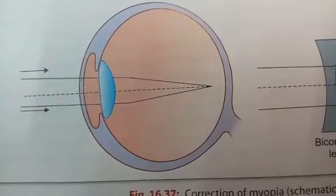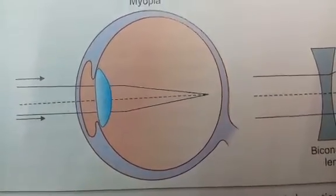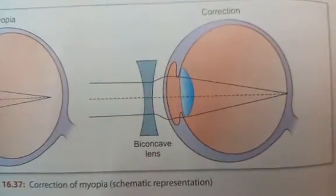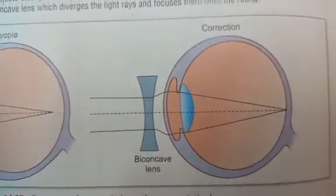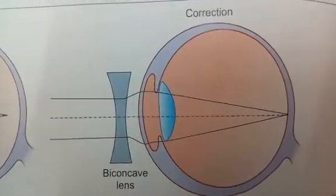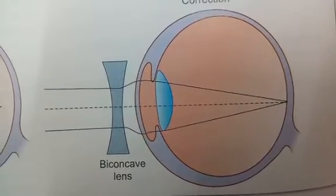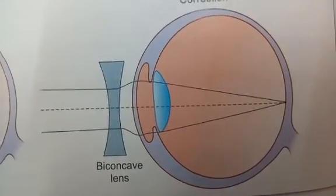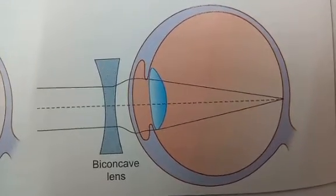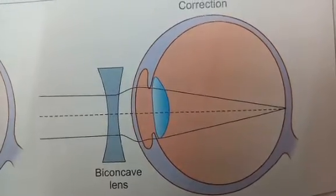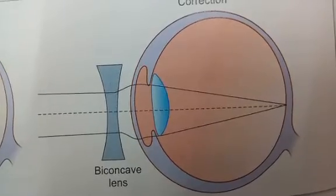Myopia is corrected by using a concave lens. With the concave lens, the parallel rays enter through the lens and are focused correctly on the retina. Hypermetropia is another disease of the eye, which occurs due to a decrease in the anterior-posterior diameter of the eyeball.